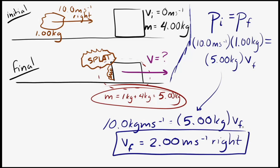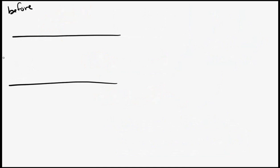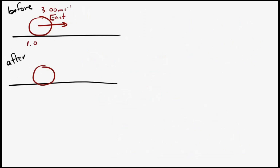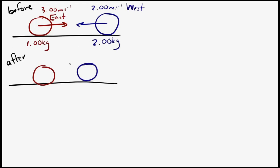Now let's try another example with two spheres approaching each other. The sphere on the left moves at three meters per second east with a mass of one kilogram. The other sphere moves at two meters per second west with a mass of two kilograms. After the collision, the second sphere moves at 1.5 meters per second to the west. We want to find the velocity of the first sphere after impact.